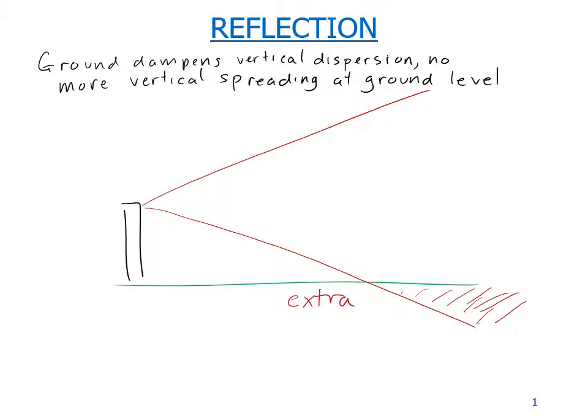We have this extra material which actually ends up getting essentially reflected off the ground. It's not really like it bounces off the ground, but the vertical mixing slows down near the ground and so it kind of builds up near the ground.